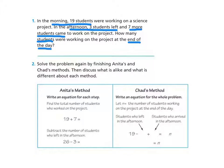Anita solved this problem one way, and Chad solved it a different way using the same problem. Let's first look at Anita's method. It says: write an equation for each step. Find the total number of students who worked on the project. What Anita first did is she made an addition problem. She said 19 students worked in the morning, and 7 students came in the afternoon, so Anita added 19 plus 7, which equals 26.